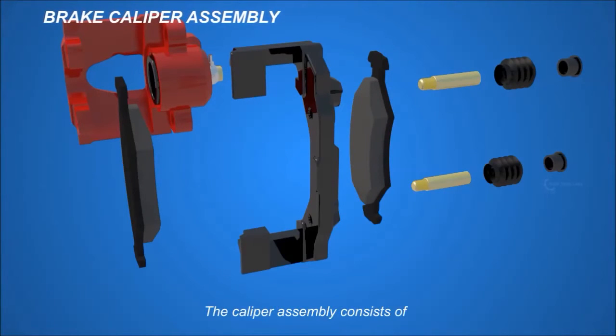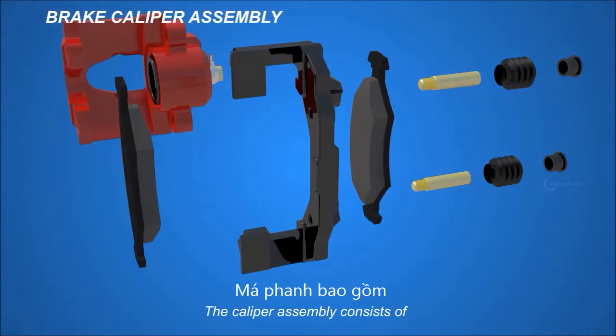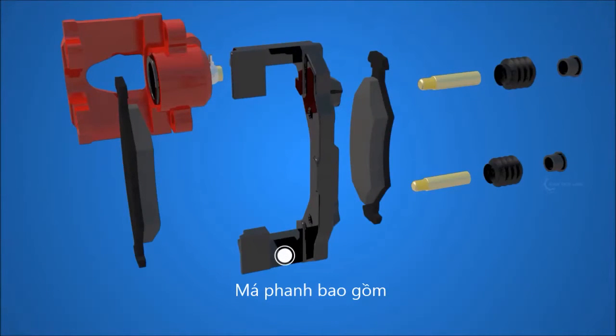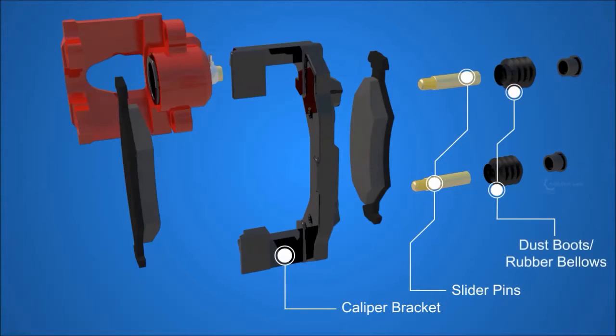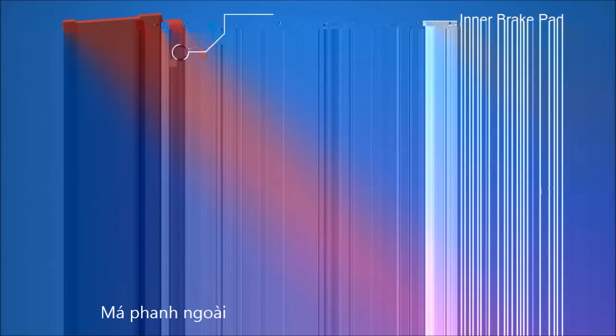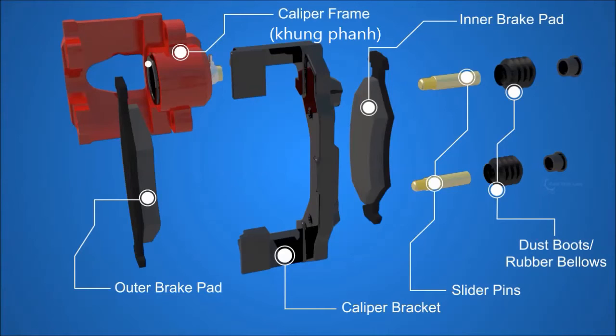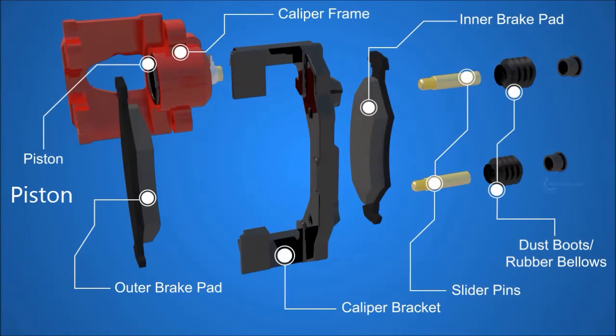The caliper assembly consists of the caliper bracket, slider pins, dust boots, inner brake pad, outer brake pad, caliper frame, and inside it, the piston.